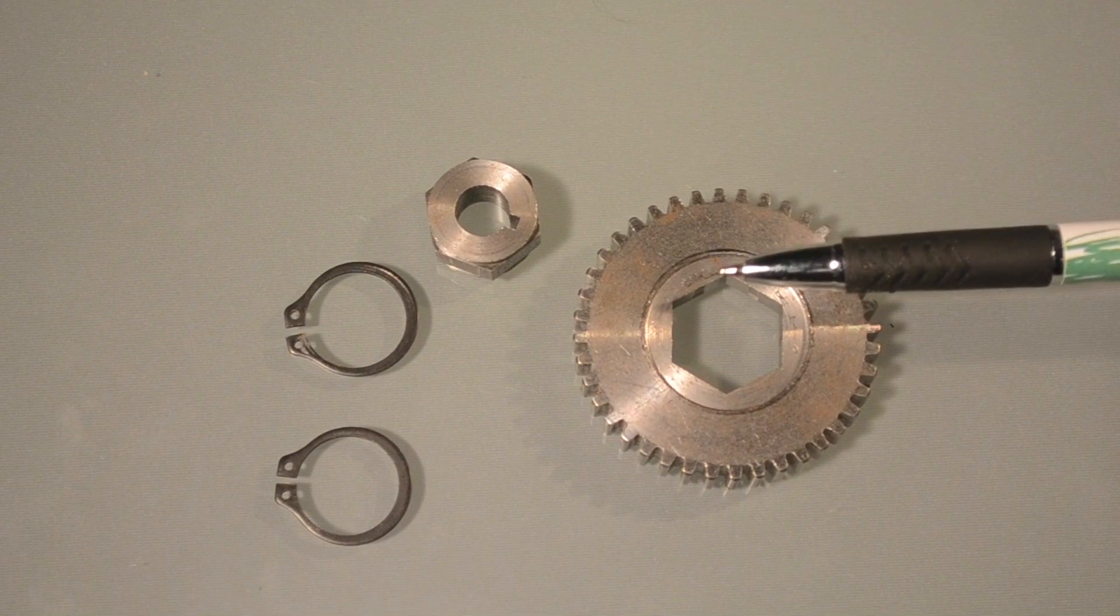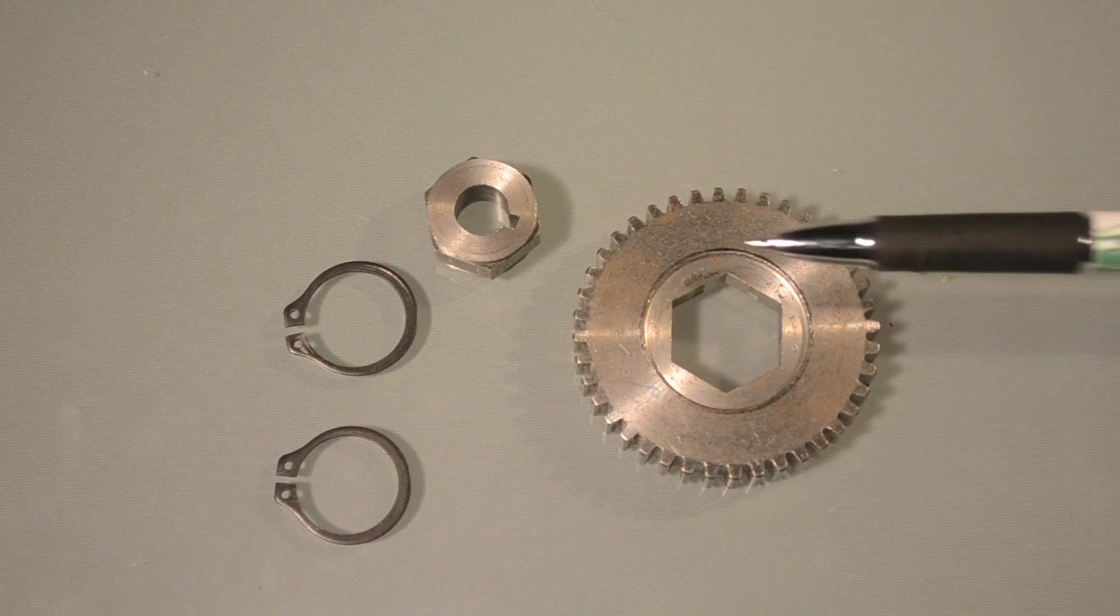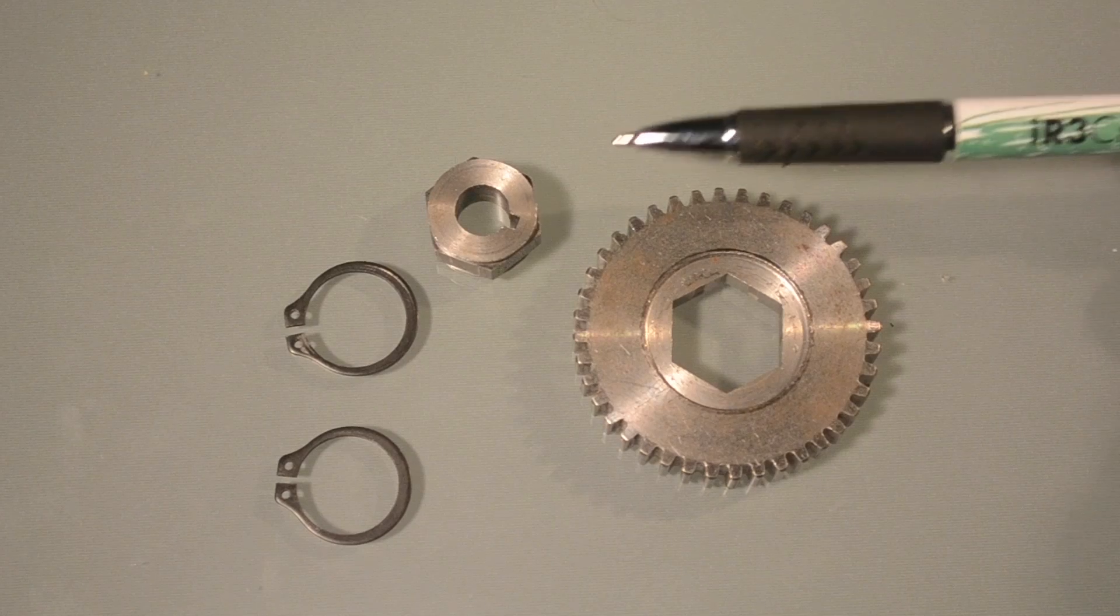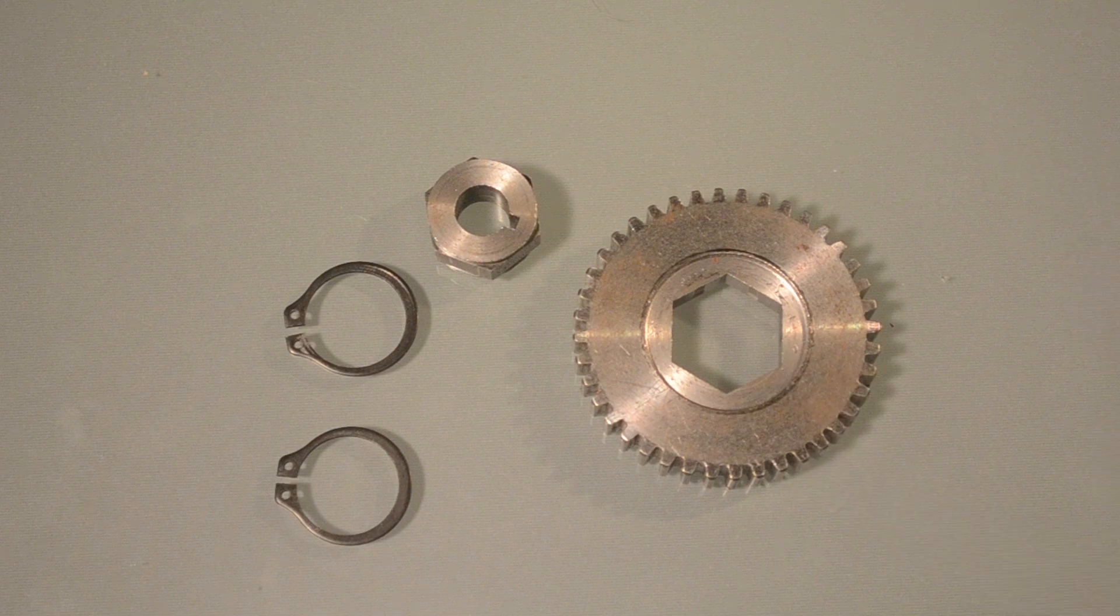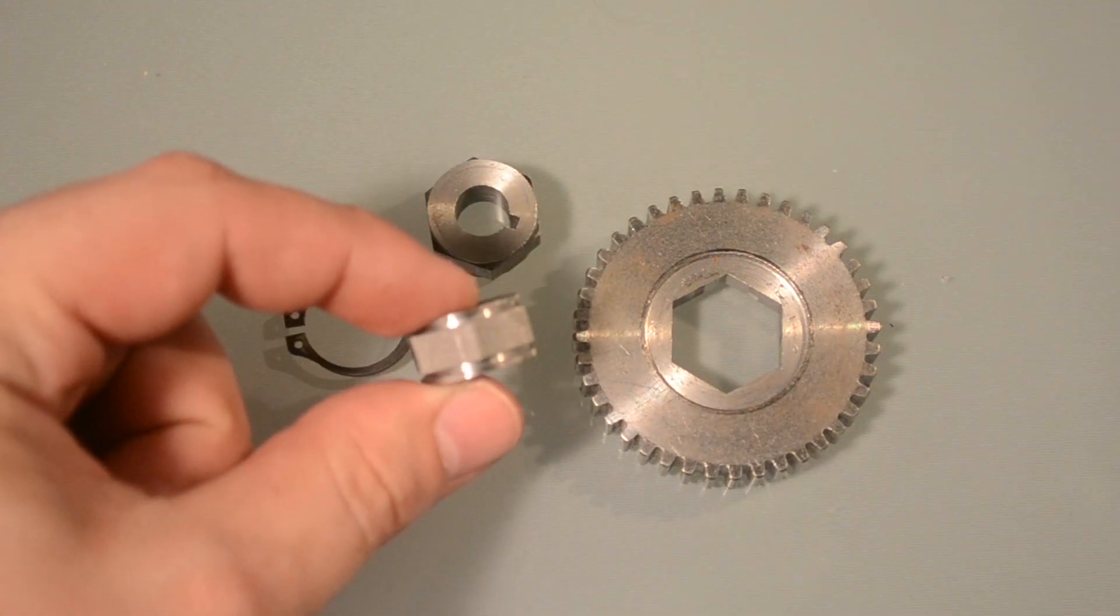This simple system involves three main components, a specially made gear with a large hex bore and two machine counterbores that conceal and protect a set of retaining rings, and of course, the FlexHub.